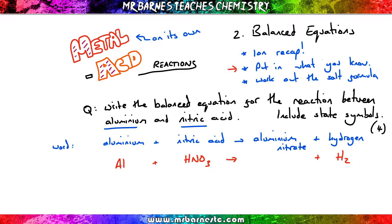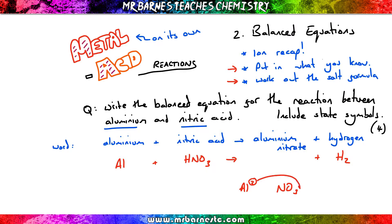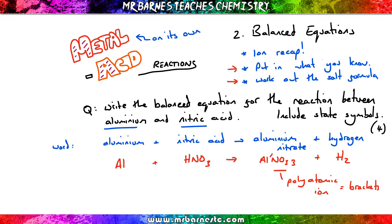Now we need to work out the formula for aluminium nitrate. If you've watched the video on ionic recap, you'll know aluminium is in group 3, so it becomes Al³⁺. And your nitrate is one of the ones you have to learn, which is NO₃⁻. We get rid of the charges, take any numbers from the top and move them down below. The only difference here is I've got a polyatomic ion, so I need to put a bracket in because I'm multiplying everything in that polyatomic ion by three.